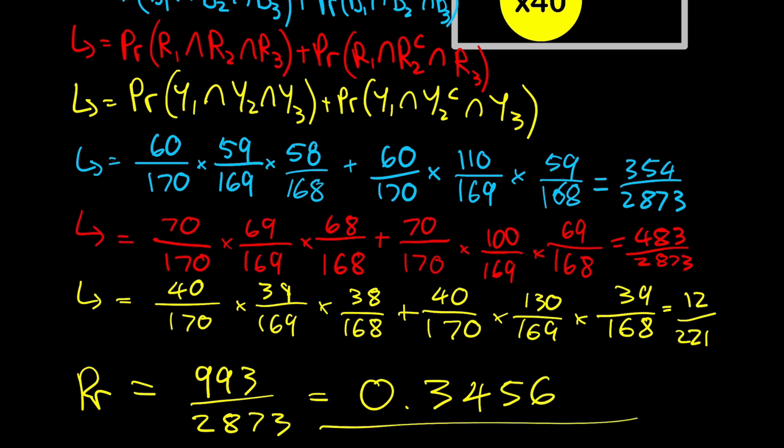As a decimal, 993/2873 is approximately 0.3456 rounded to four decimal places, and that is the final answer to this probability question. I hope you found it useful and enjoyed it — if you did, please leave a like and subscribe to my channel. Thank you for watching.